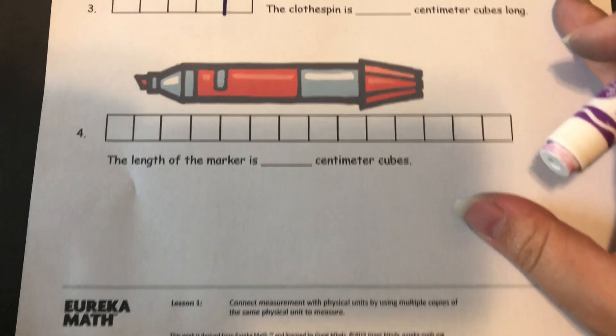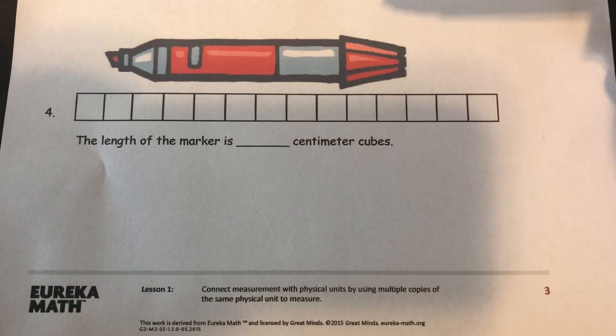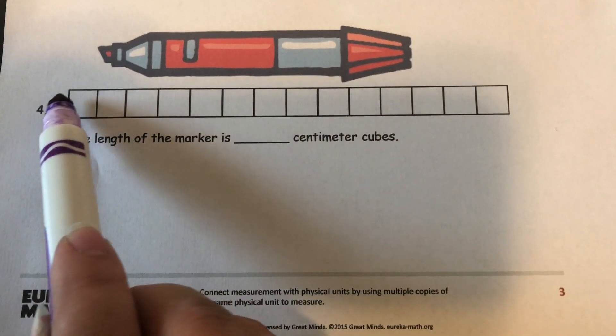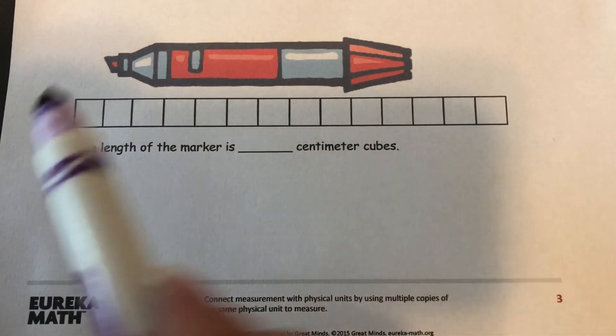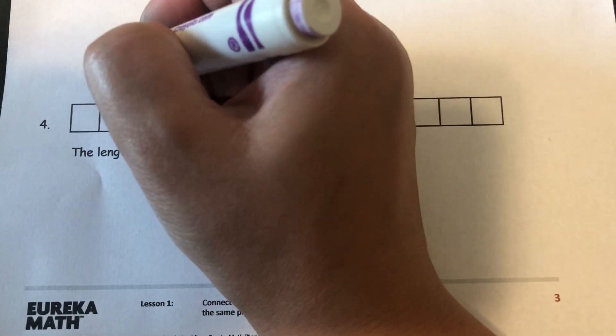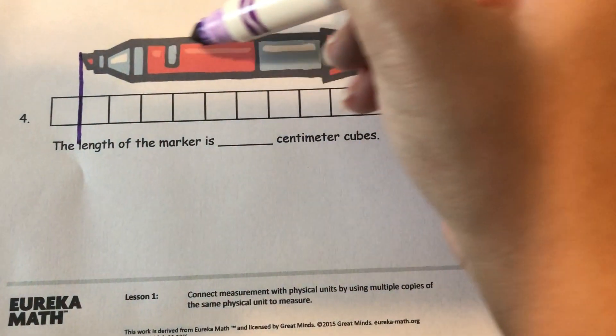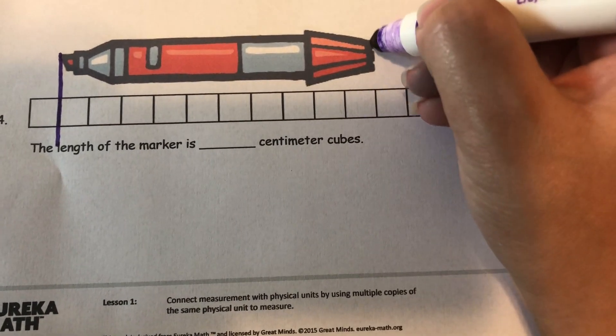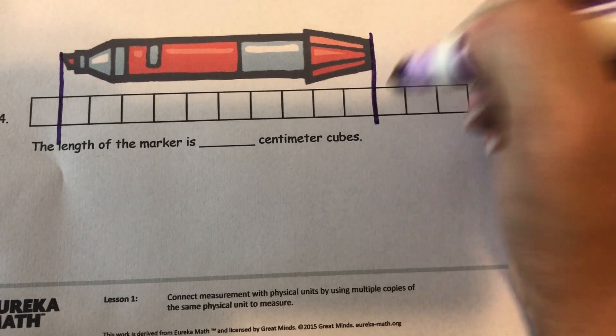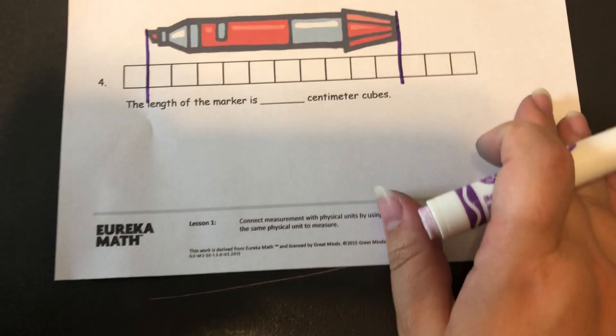And this is the very last one. Be careful because it doesn't start where the centimeter cube starts. It actually starts right here and then it also doesn't end where the cubes end. It ends on this one. So we can go ahead and do this one together.